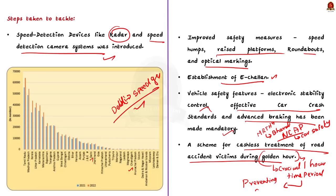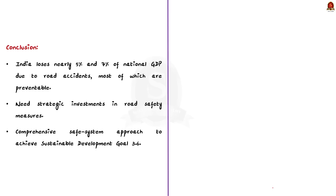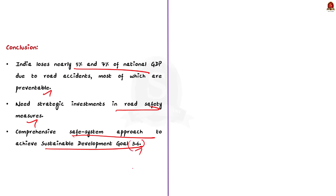In the conclusion, you can write that India loses nearly 5% to 9% of national GDP due to road accidents, most of which can be prevented. We need strategic investment in road safety measures and a comprehensive road safety process to achieve Sustainable Development Goal 3.6. In this discussion, we covered various aspects of road safety in India. Now let us take up the next news article.